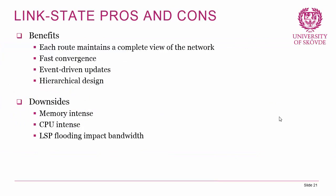Looking at the pros and cons of link state routing protocols: the benefit is that each router maintains a complete view of the network, and this allows for fast convergence because every router is aware of every path to the network. Updates are event-driven, so there is no unnecessary flooding of routing updates — as with EIGRP, hello packets are used to maintain adjacencies with neighboring routers. It's also hierarchically designed, which we'll see why is beneficial in a later lecture. On the downside, it's both memory and CPU intensive because routers must maintain the complete view of the network, and LSP flooding can impact bandwidth. However, LSPs are only flooded during initial startup and when there is a change in the topology.